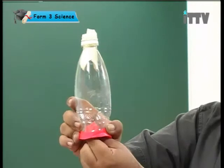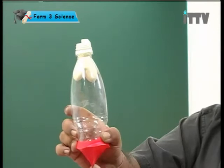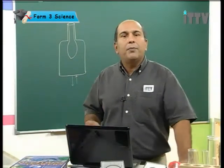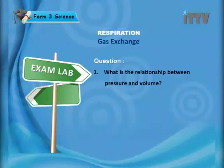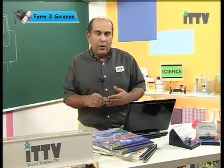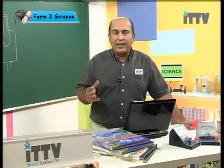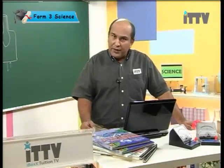And that is a simple model of how our lungs work. Now that we've had a look at that demonstration, let's try a couple of questions on what we've just observed. What is the relationship between pressure and volume? The relationship can be written either way — when one increases, the other one decreases. It doesn't matter which way you write it, as long as you understand that they are opposite to each other.